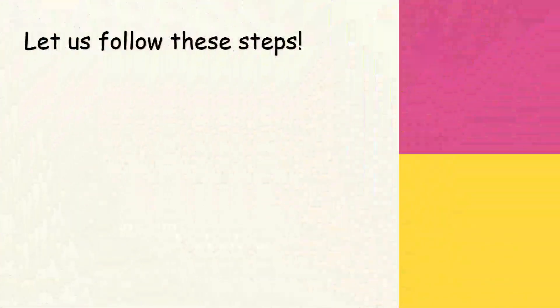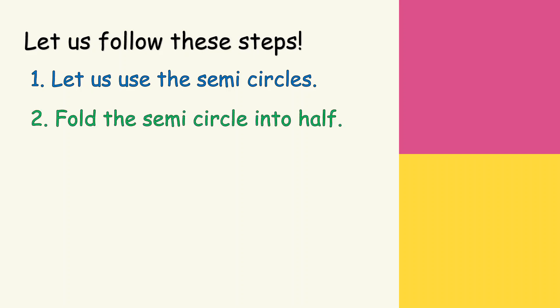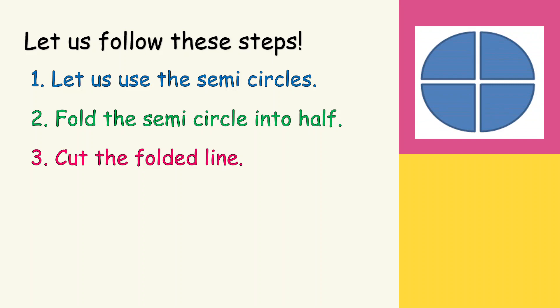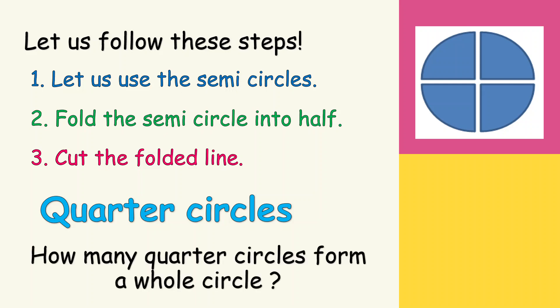Let's continue. We're going to make another shape using the semicircles. Fold the semicircle into half, then cut the folded line. You'll have these new shapes. We call those shapes quarter circles. How many quarter circles form a whole circle? There are four quarter circles.